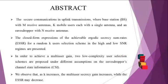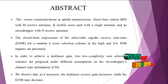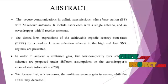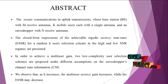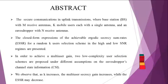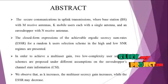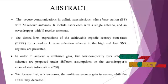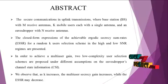The Secure Communications in Uplink Transmissions considers a base station with M receive antennas, K mobile users each with a single antenna, and an eavesdropper with N receive antennas. The closed form expressions of the achievable ergodic secrecy sum rates for a random K-user selection scheme in the high and low SNR regime are presented. In order to achieve a multi-user gain, two low-complexity user selection schemes are proposed under different assumptions on the eavesdropper's channel state information.